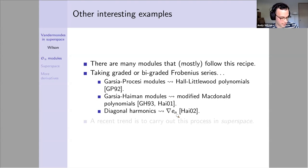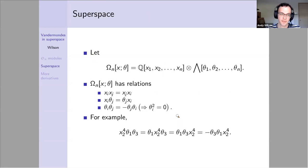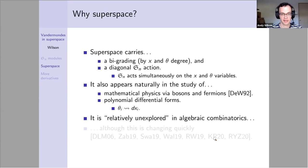What we're going to do is take this idea into super space. This is a popular trend. Super space is this tensor product: polynomials in the x variables tensor the exterior algebra in the theta variables. There are two types of variables. The x variables commute with each other, x and theta variables commute, and the theta variables anti-commute. In particular, theta_i squared is always zero for any i.